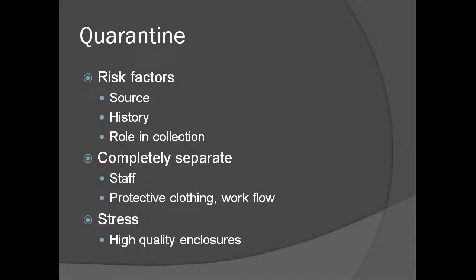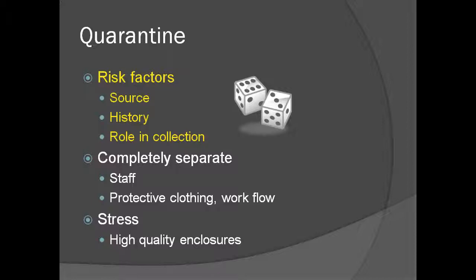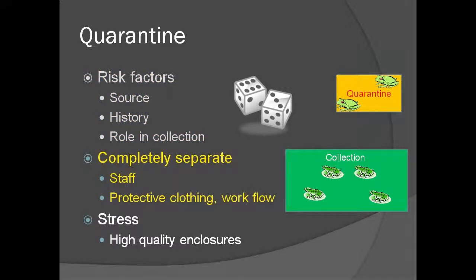Quarantine of animals coming into the collection is very important to reducing risk. The risk changes with different factors, including the source of the incoming animals — wild-caught animals are more likely to carry new pathogens or parasites. Their history also matters: if there was a recent outbreak of mortality at the sending institution, these animals would be higher risk. Quarantine facilities should be completely separate from the rest of the collection. Ideally, separate staff would care for these animals. If not, protective clothing and workflow patterns previously discussed should be employed.